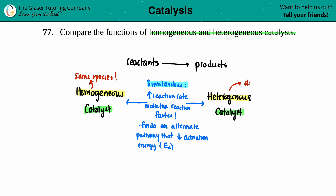Heterogeneous means different. When you have a heterogeneous mixture, you can see the differences. This would be like biting into a candy bar — a Snickers for example. There are tons of ingredients, and when you bite it you can clearly see the difference — you can see the chocolate and the nuts. Even biting into a Reese's, you see the chocolate and the peanut butter. So that's also heterogeneous.